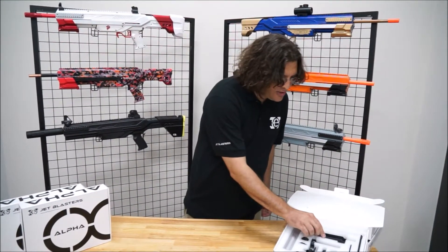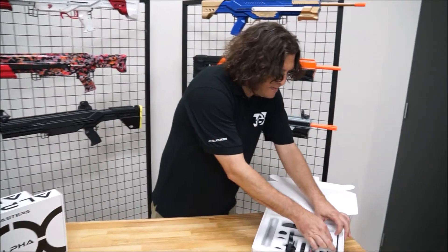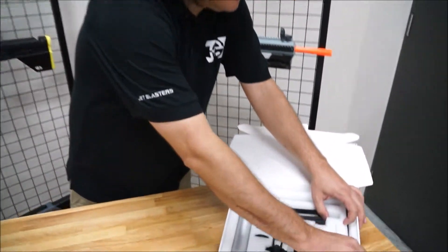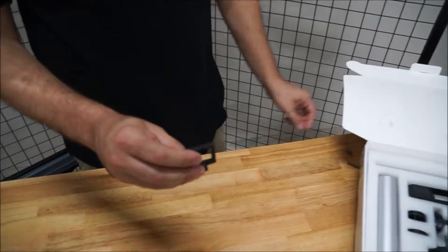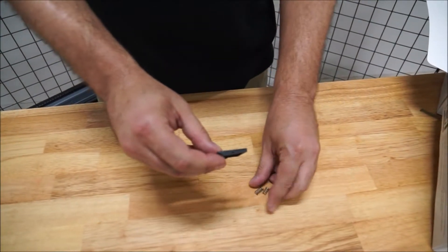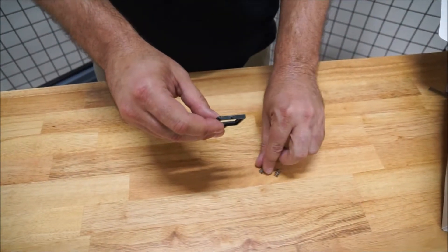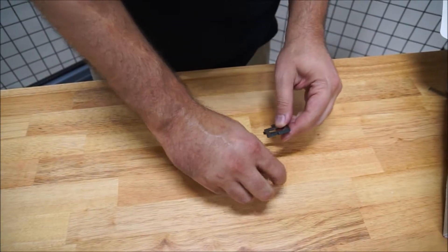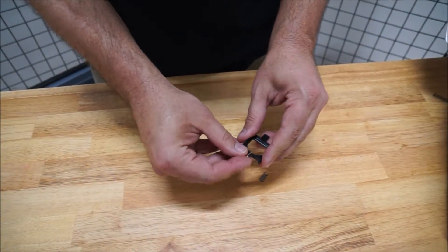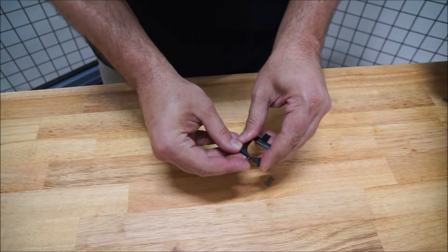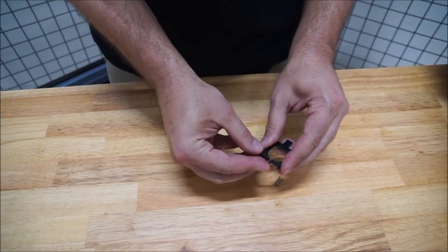The second thing we wanted to show you, very important part, is the trigger catch and the springs. You may notice it comes with two springs. One is made for a Zeus, the other is made for a Longshot. The Zeus spring should be put right in the middle of the Zeus. This is where we fine-tuned it and this is where it works the best.